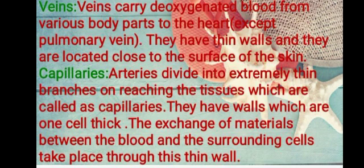Veins carry deoxygenated blood from various body parts to the heart, except the pulmonary vein, which brings oxygenated blood from the lungs to the left auricle. Veins have thin walls and are located close to the surface of the skin. Capillaries are extremely thin branches that arteries divide into on reaching the tissues. They have walls which are one cell thick, and exchange of materials between blood and surrounding cells takes place through this thin wall.